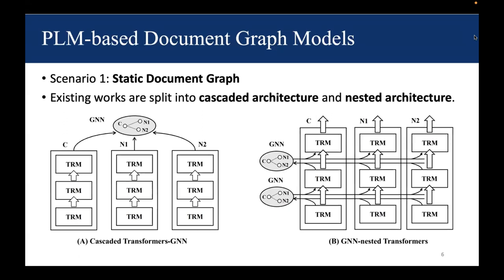On the right-hand side, we have nested architecture. Language models and graph neural networks are nested at each layer to better integrate textual documents and graph connectivity.